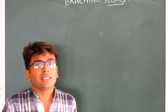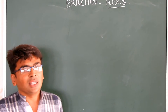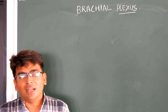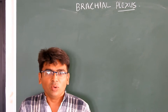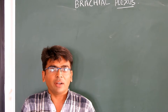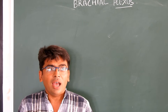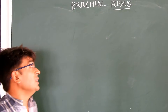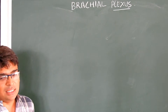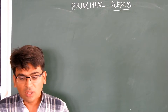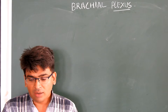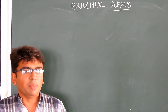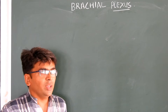The brachial plexus is just like a tree. A tree has a root, trunk, and branches. In the same way, the brachial plexus has a root, trunk, division, cords, and branches.